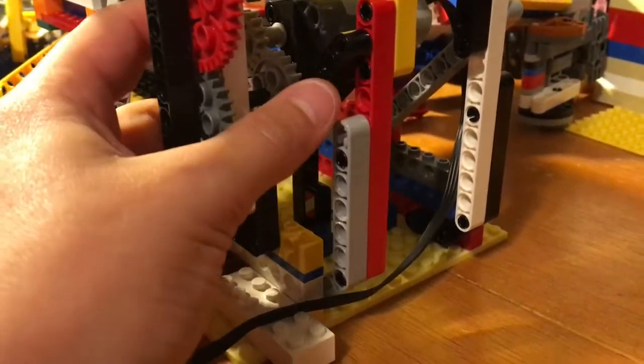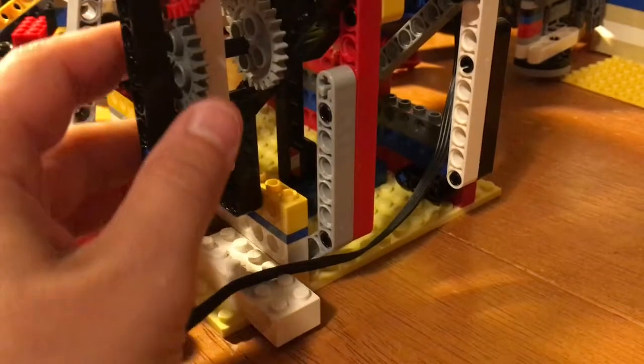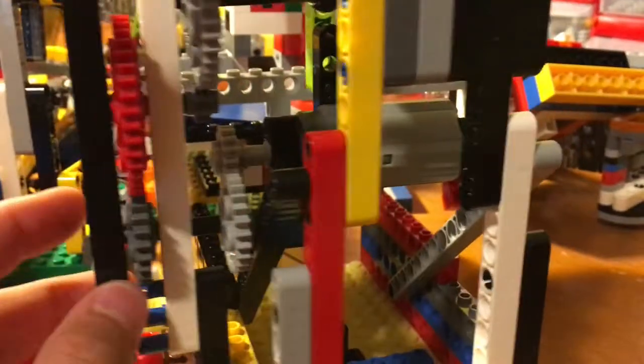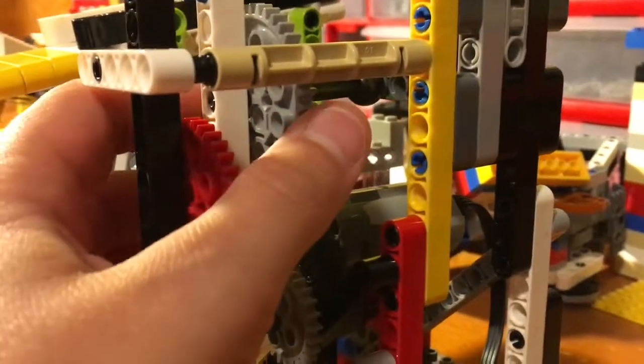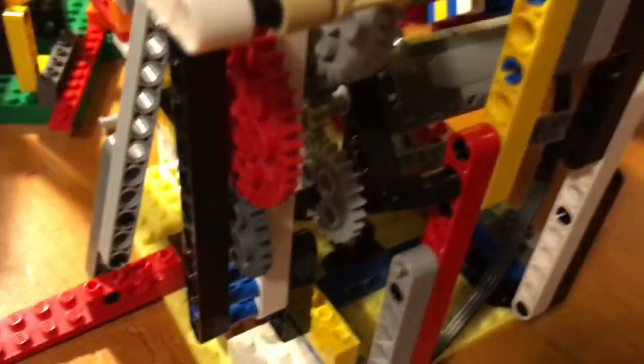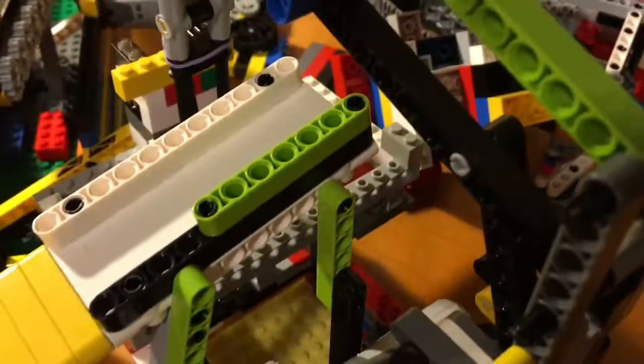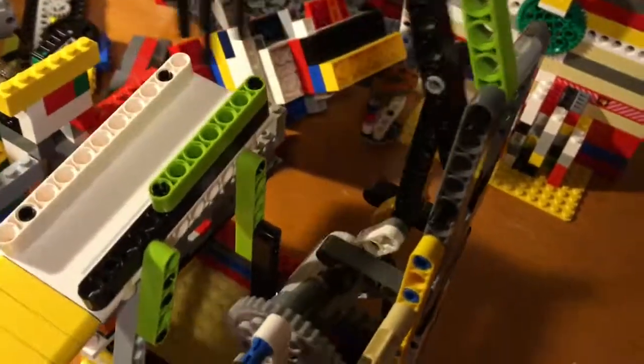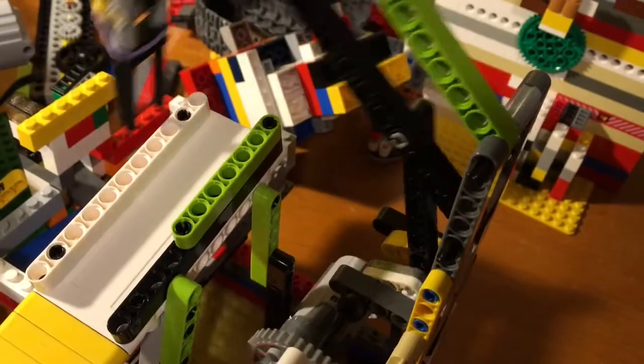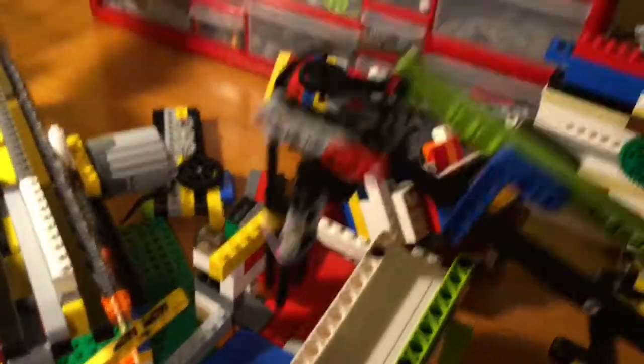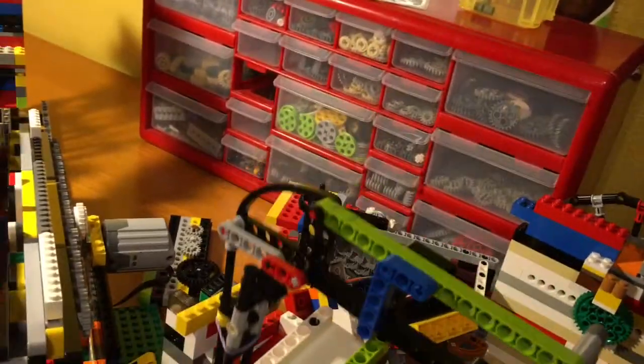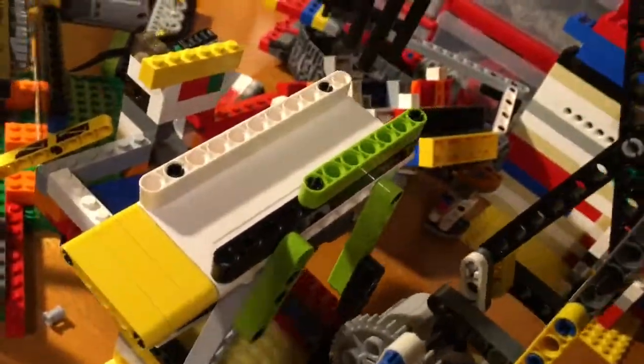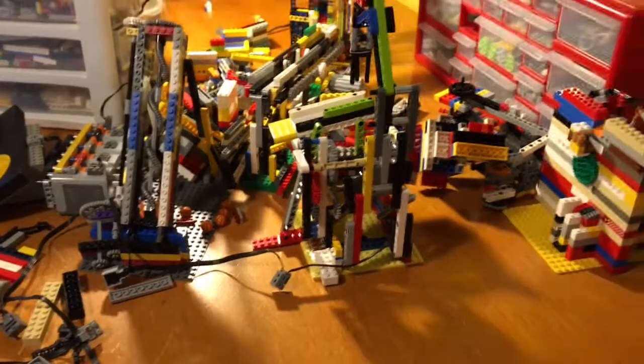Basically the motion travels from the small gear to the bigger one, to the dark gray, to the red. And then there's a smaller one in the back that turns this. And then the mechanism, look at that. And that's basically it.